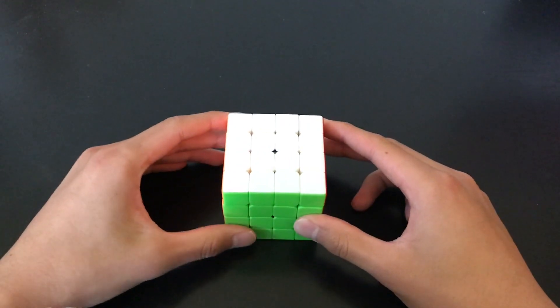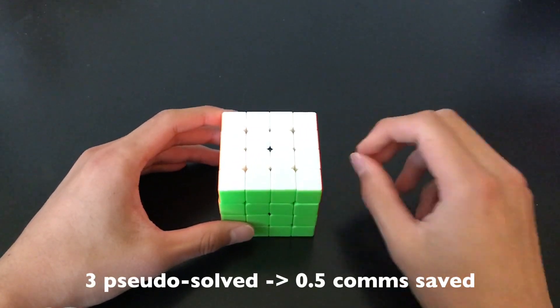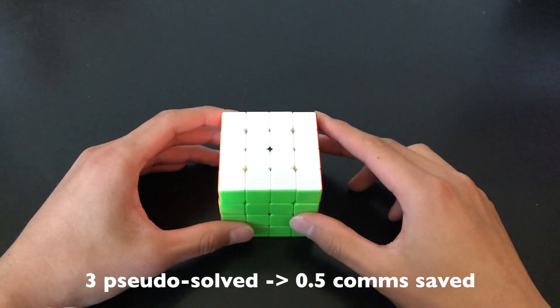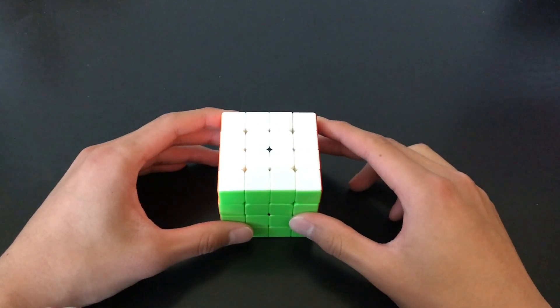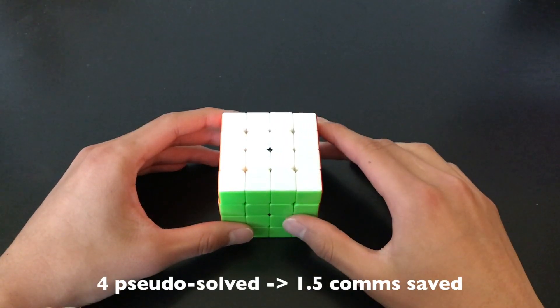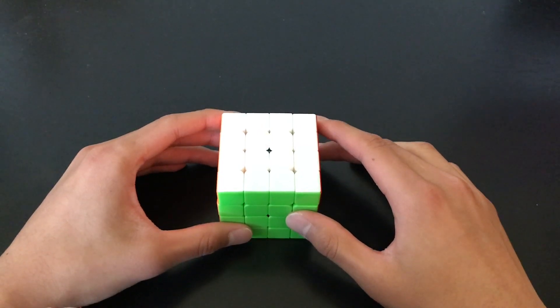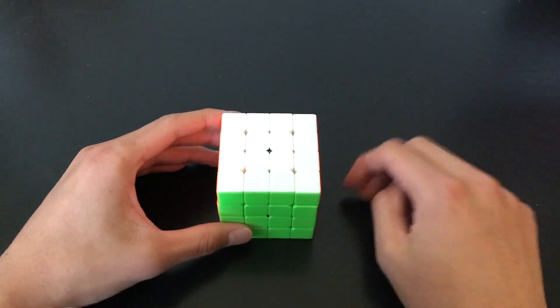So, I've done a lot of calculations on this and I found that if we have three pseudo-solved centers, it saves 0.5 comms on average, counting the two-center, two-center alg as a comm. If we have four pseudo-solved centers, it saves 1.5 comms on average. So, personally, I think it's only worth it when you have three or four pseudo-solved centers.